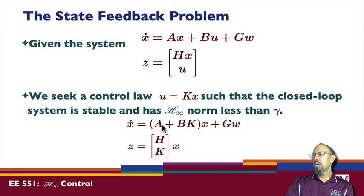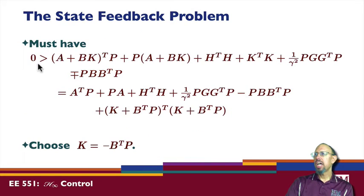And so in our previous bounded real lemma, this would be our A matrix, our G matrix, this would be our overall H matrix. And so in order, we've seen what's required by the bounded real lemma for this to have H infinity norm less than gamma, and that is it needs to satisfy an inequality.